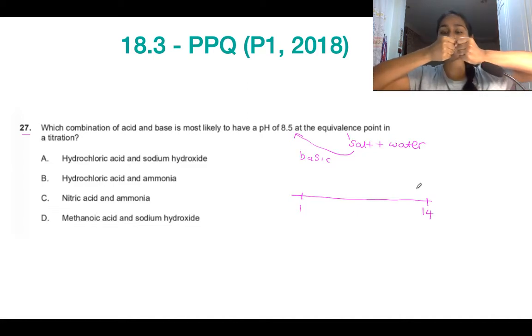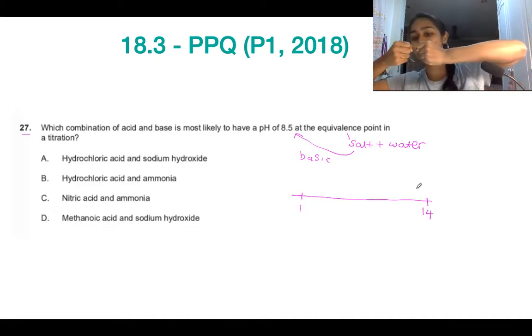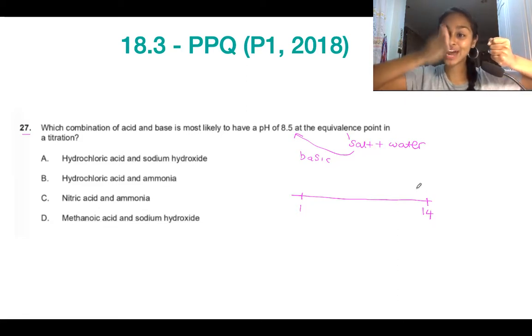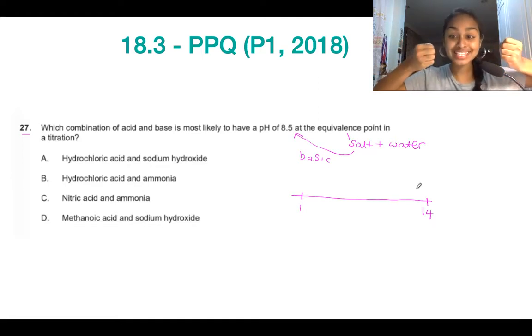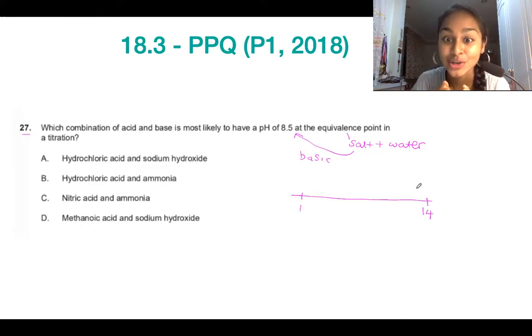For example, if you've got a strong acid and a strong base, the middle ground is going to be a pH of 7. However, if you've got a weak acid and a strong base, this means that the strong base is going to pull the pH of the salt closer to the basic region. So in order for it to have a pH of 8.5, we're looking for a combination of a strong base and a weak acid.